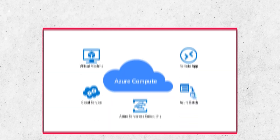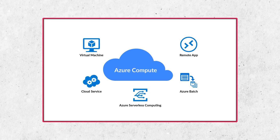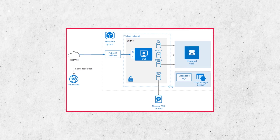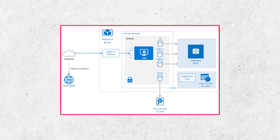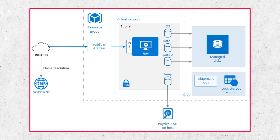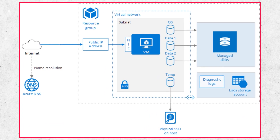IaaS, as the name suggests, offers virtualized computing resources over the internet. It provides users with virtual machines, storage, and networking capabilities, giving them full control over the underlying infrastructure. An example of IaaS in Azure is Azure Virtual Machines, which allows users to create and manage virtualized servers.